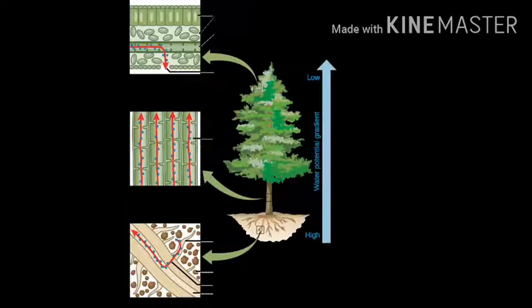Due to this root pressure, water moving upward forms a column which is maintained up to a certain height of the plant. But actually, in tall trees, this type of absorption plays not a major role, but a minor role in transporting water.